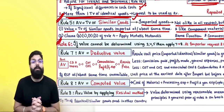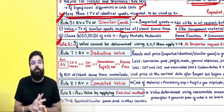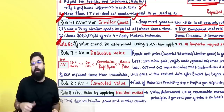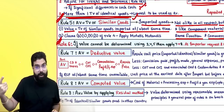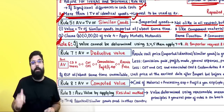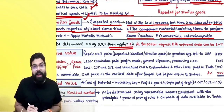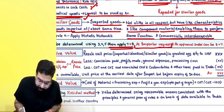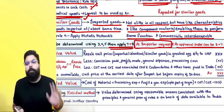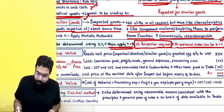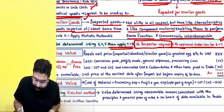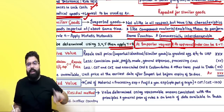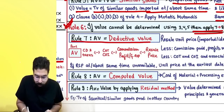Under Rule 5, the officer will take the transaction value of similar goods imported at or about the same time, at the same commercial level and substantially same quantity, or different commercial level with adjustments. He will also make adjustments for freight and insurance if substantial, and if more than one acceptable transaction value is available, the lowest will be taken.